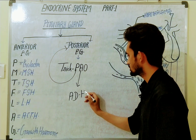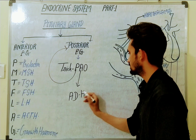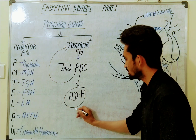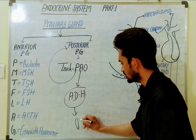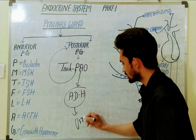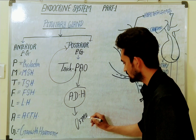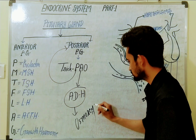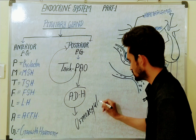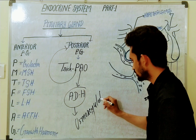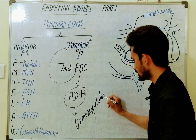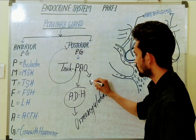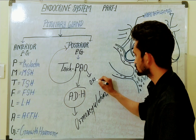The posterior pituitary secretes ADH, the antidiuretic hormone, whose main function is osmoregulation. It also secretes oxytocin.